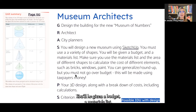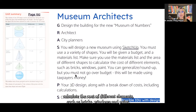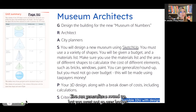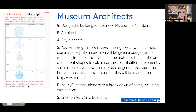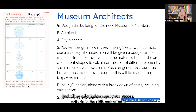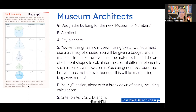You'll be given a budget and a materials list — make sure you use the materials list and the area of different shapes to calculate the cost of different elements such as bricks, windows, and paint. You can generalize or round up but you must not go over budget, as this will be made using taxpayers' money. The product is your 3D design along with a breakdown of costs including calculations, and your success criteria is the different criteria for MYP. This is a possible interdisciplinary unit with design.